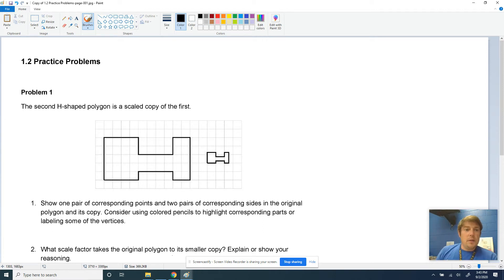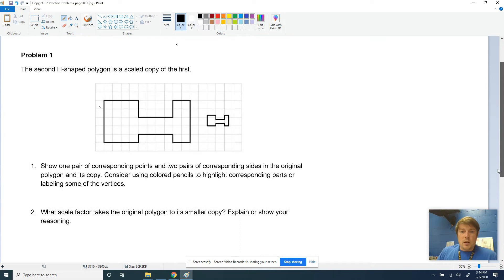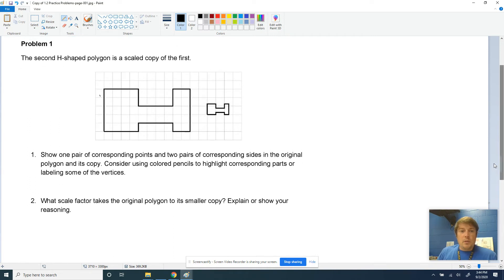We're looking at this H-shaped polygon. This H-shaped polygon is a scaled copy of the first bigger H-shaped one that's right before it. So we got a scaled copy that we're dealing with here. What we know about scaled copies is they look the same, but they've either been shrunken to smaller size or blown up to a larger size. So the key thing here is as we look through this is we understand some of the things we've talked about.